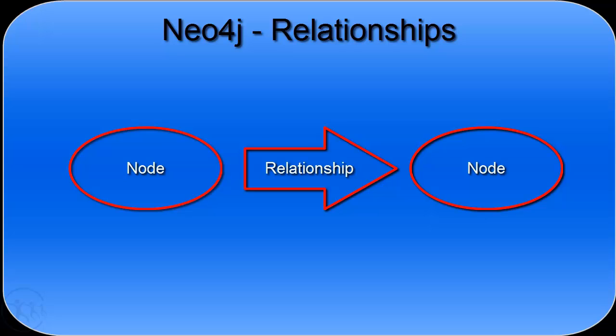Relationships don't actually have labels, but they have a type, which is very similar in concept to a label. A relationship can also have properties similar to a node, and you can create and manipulate those properties in exactly the same way. Let's start by looking at what a relationship is and the two different types: unidirectional and bidirectional.